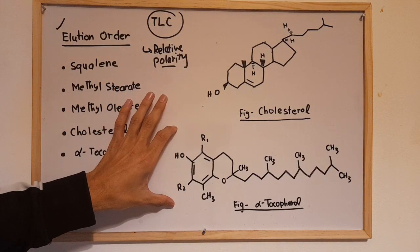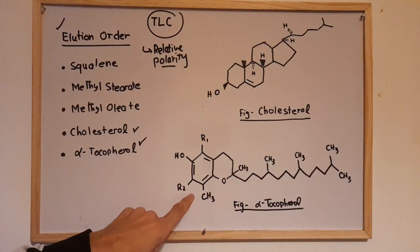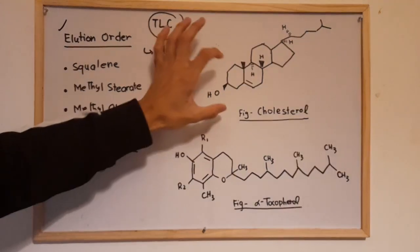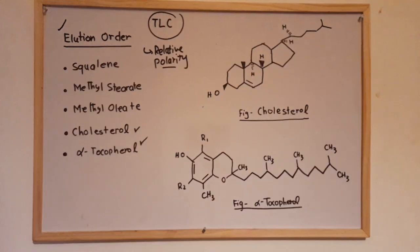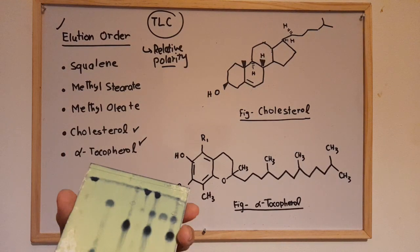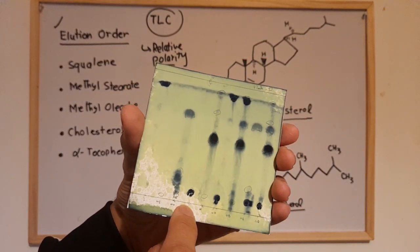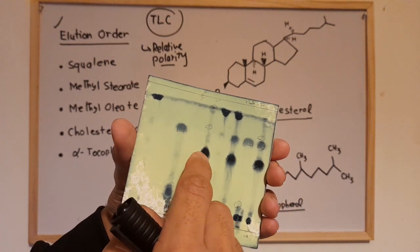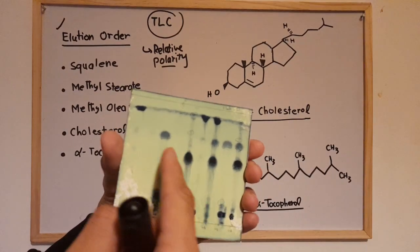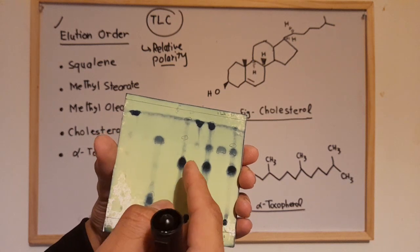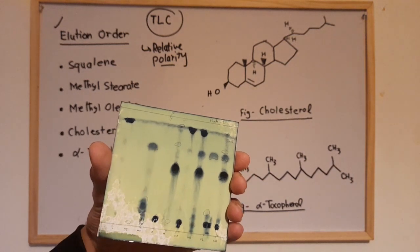Both cholesterol and alpha-tocopherol are considered polar compounds. However, cholesterol does not contain a benzene ring, while alpha-tocopherol does. They both have one hydroxyl group, so they have a similar kind of elution. Looking at the graph, the lines for alpha-tocopherol and cholesterol are not very different, but alpha-tocopherol has eluted slightly further than cholesterol.